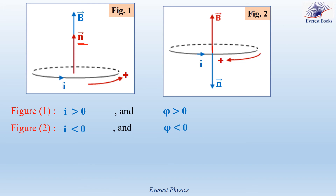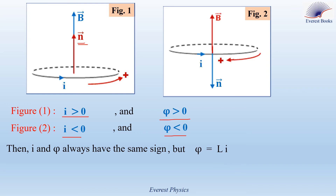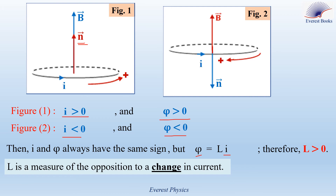Observe: in figure 1, I is positive and φ is positive; in figure 2, I is negative and φ is negative. This means I and φ always have the same sign. Since φ = L × I, and φ and I always have the same sign, L is a positive quantity. The inductance L of a coil does not affect the value of the maximum current in a circuit, but it delays its growth and its decay. Therefore, L is a measure of the opposition to a change in current.